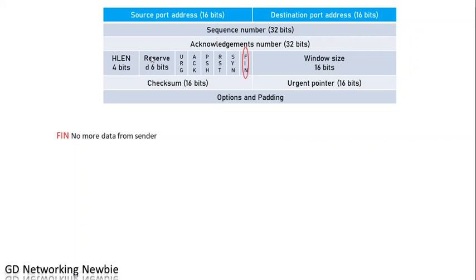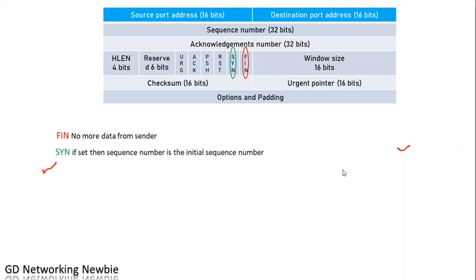After that, we have six one-bit fields. These are called six-bit fields — they are also called flags. They can each be 0 or 1. The very first flag is FIN, which indicates there is no more data from the sender. It indicates that the sender has completed the transmission of data and has no more data to be sent.